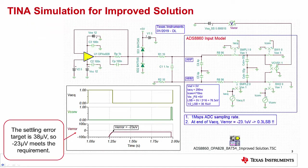This slide shows the ADC settling TINA simulation for the circuit with the protection resistor inside the feedback loop. Notice that the settling error is less than one half of 1 LSB, which is within our error budget. Furthermore, note that the protection resistor is 1 kilohm, whereas the protection resistor in the previous circuit was 249 ohms.